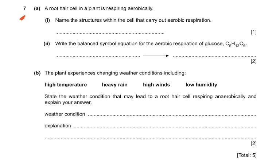Question 7: a root hair cell in a plant is respiring aerobically. Name the structures within the cell that carry out aerobic respiration. The answer is mitochondria, or mitochondrion. Then write the balanced symbol equation for the aerobic respiration of glucose: C₆H₁₂O₆ + 6O₂ → 6CO₂ + 6H₂O. Getting the reactants correct is one mark and the products correct is the second mark.